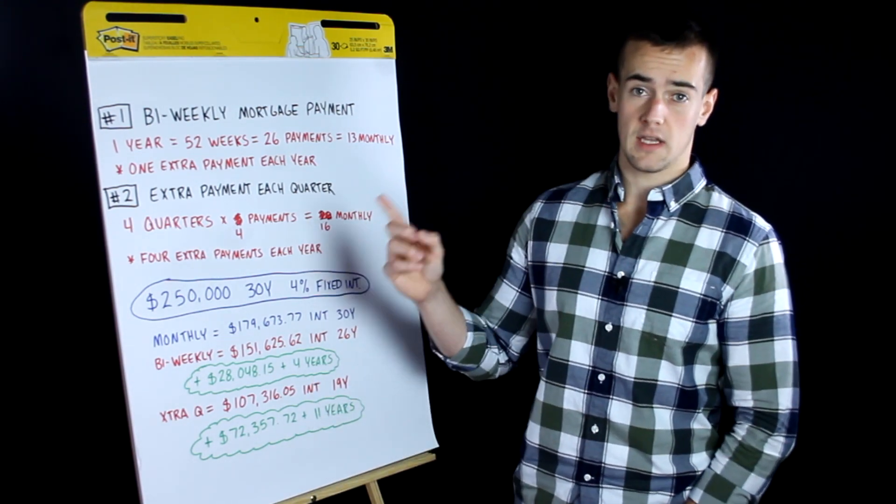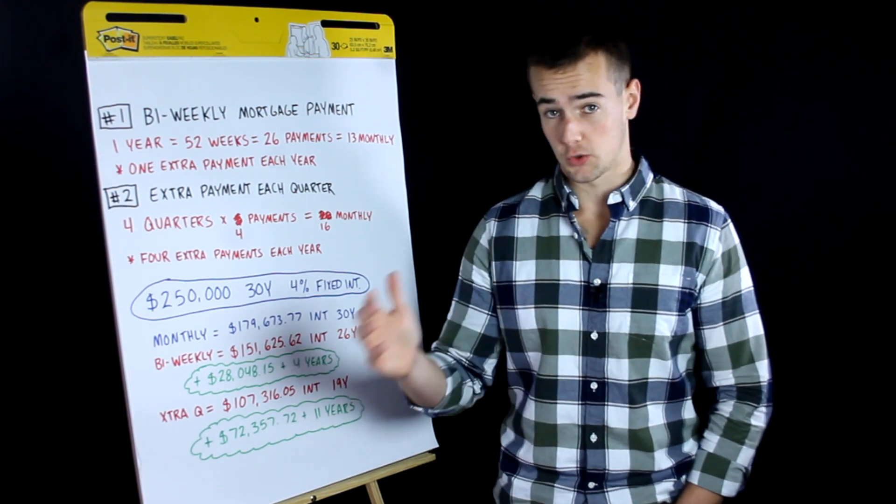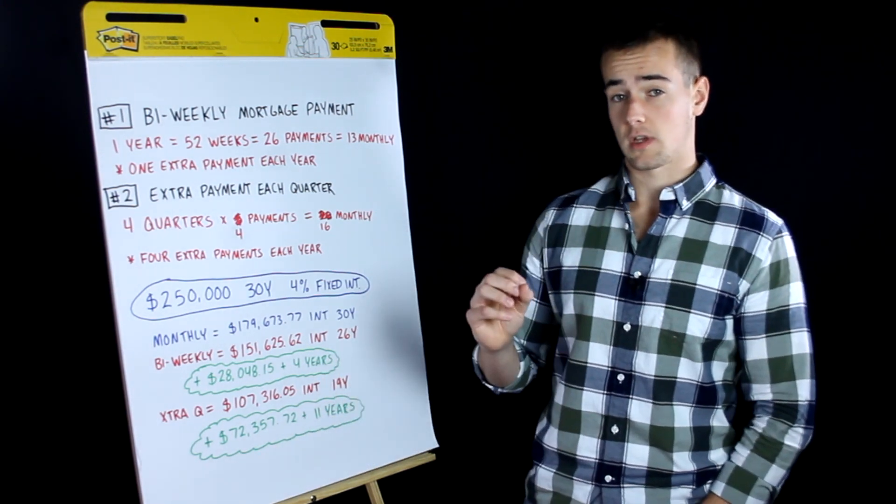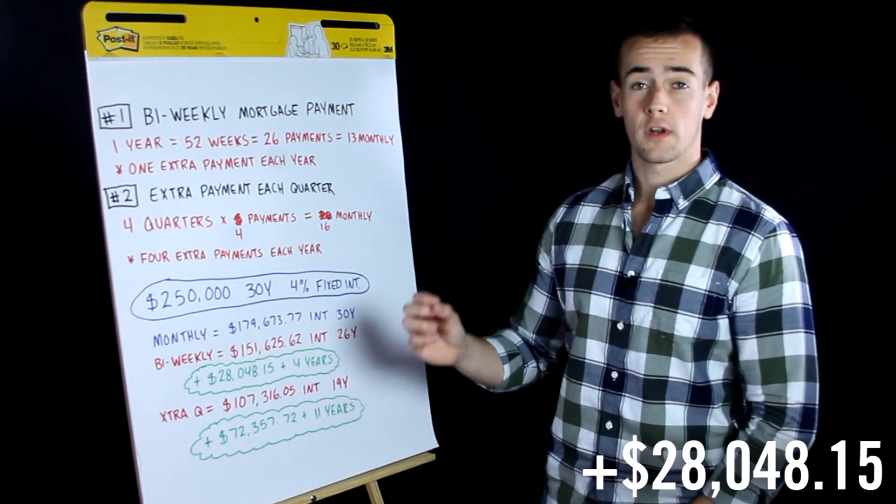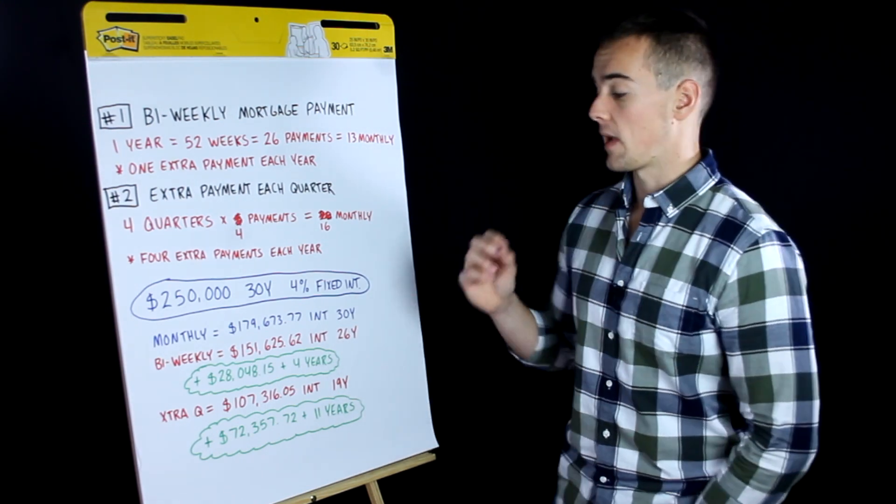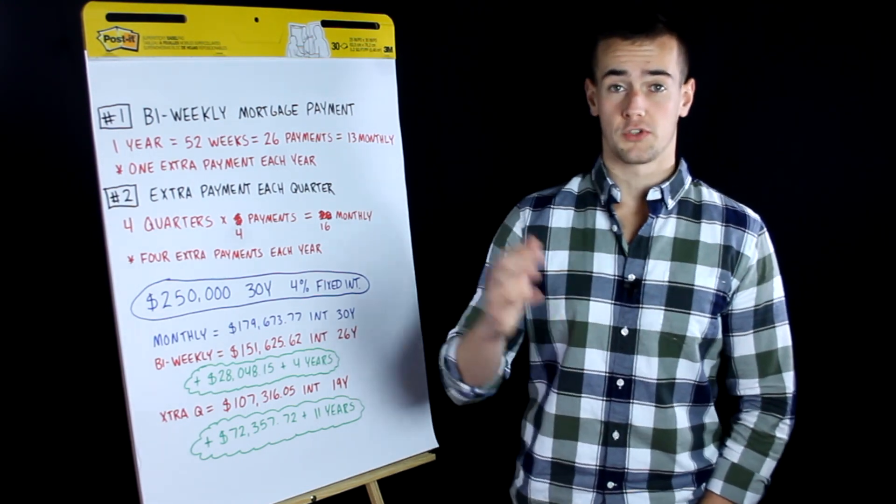So by making one extra payment each year by following that bi-weekly strategy, you're actually saving yourself $28,048.15 in interest, and you're paying off your mortgage four years sooner.